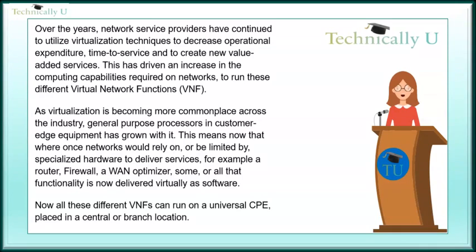This means that where networks would rely on, or be limited by, specialized hardware to deliver services — for example a router, firewall, a WAN optimizer — some or all of that functionality is now delivered virtually as software. Now all these different virtual network functions can run on a universal CPE, placed in a central or branch location.